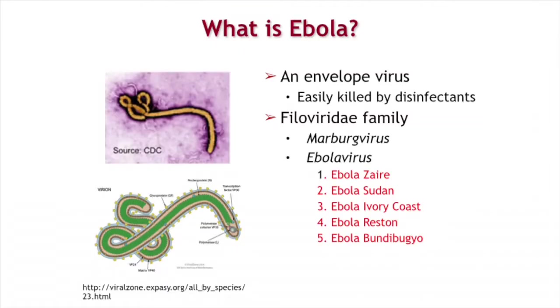Ebola is an enveloped virus, easily killed. It's a member of the Filoviridae family that includes viruses like Marburg virus. There are eight subtypes of Ebola virus. This particular strain causing this outbreak is the Ebola Zaire strain, which is thought to be more virulent and pathogenic than some of the other strains.